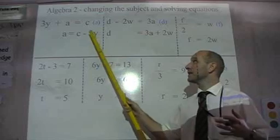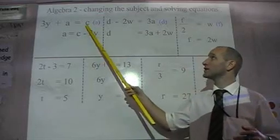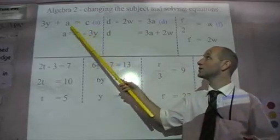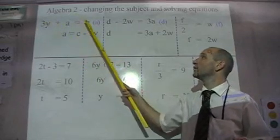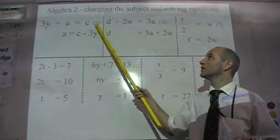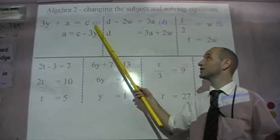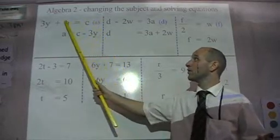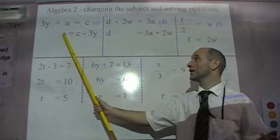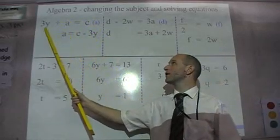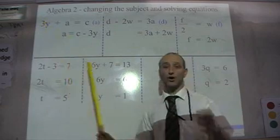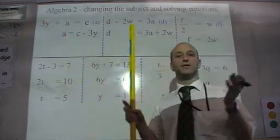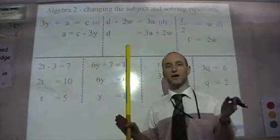Changing the subject is when we want to change, in this case we have C equals A plus 3Y. We don't want C equals, the question has asked us to change it to be A equals. So we want A all on its own on this side. I need to get rid of the 3Y. The core method we use here is we do the same thing to both sides of the equation.